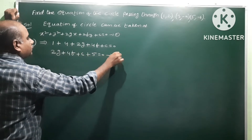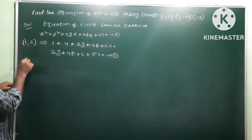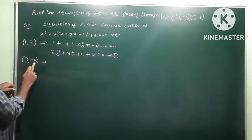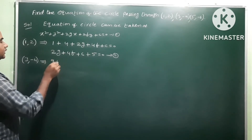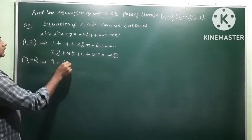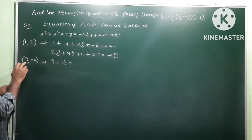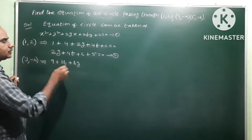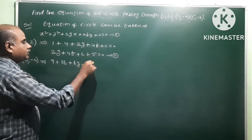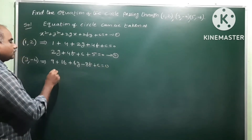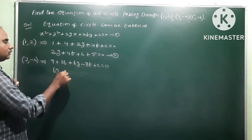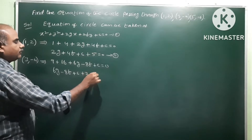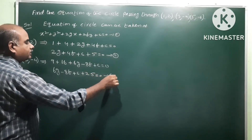Second point: (3, -4). So x=3, y=-4. x² = 9, y² = 16. 2g·x = 6g, 2f·y = 2f·(-4) = -8f. Plus c = 0. Therefore 6g - 8f + c + 25 = 0. This is equation number 3.